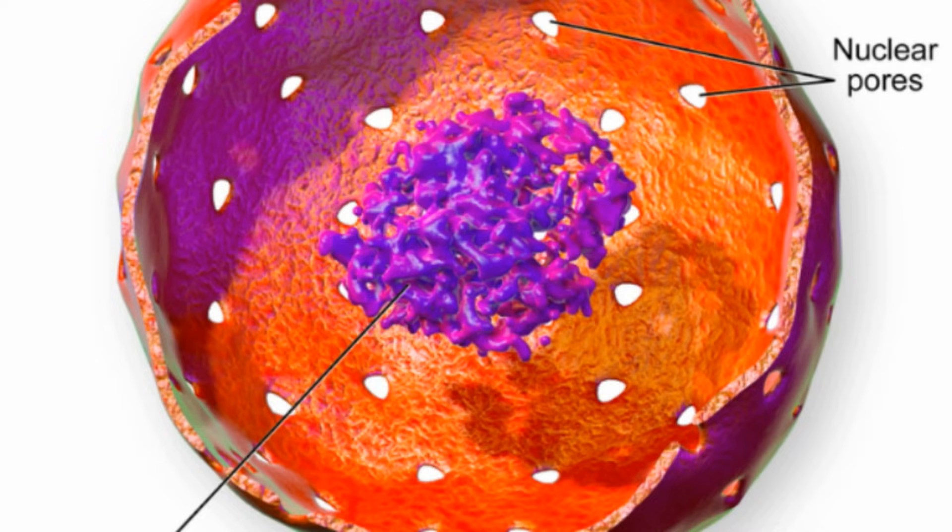Up next are the nuclear pores. These are openings found on the nuclear membrane. They allow items to move in and out of the nucleus. An example would be messenger RNA.